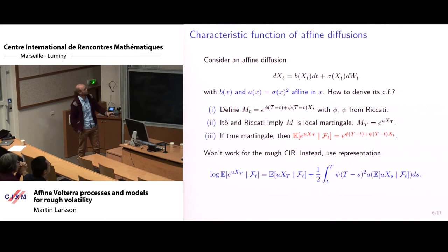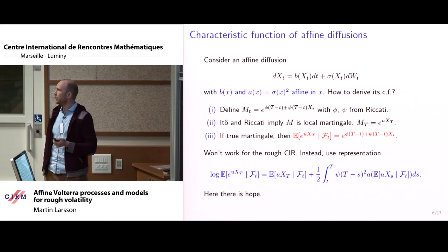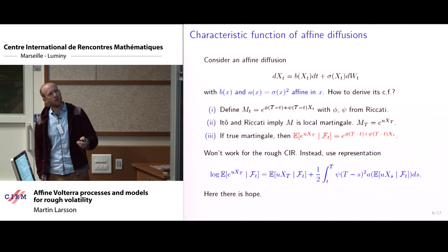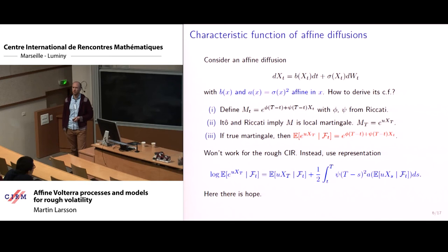Also, there is no reason to expect that this conditional characteristic function here will depend on x only through its value at time t, because it's not a Markov process. So this kind of expression, there's no reason to expect that this should hold and it doesn't hold. So this is not a good starting point to try to extend the standard way of viewing affine processes. There is, however, a different representation of the conditional characteristic function of a standard affine process, which you see less frequently, but which is actually very nice.